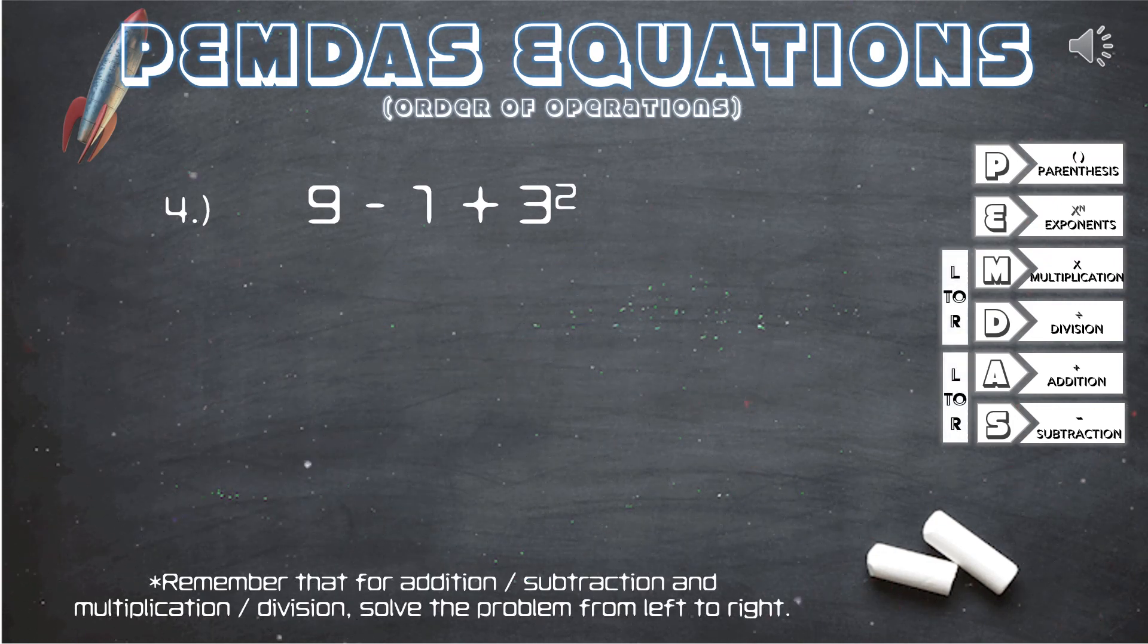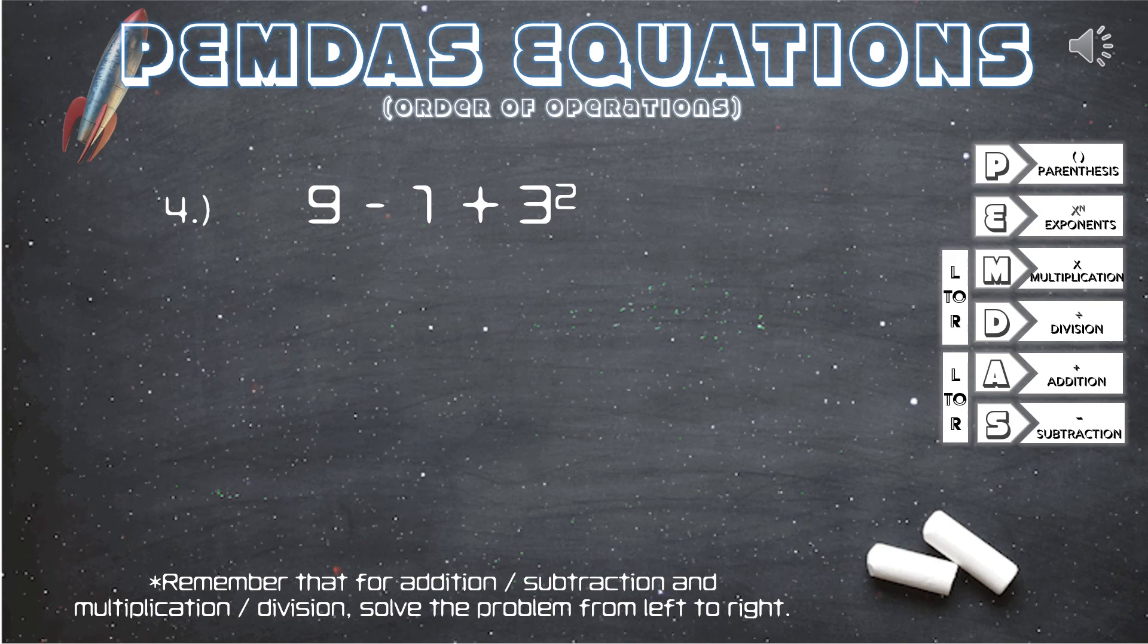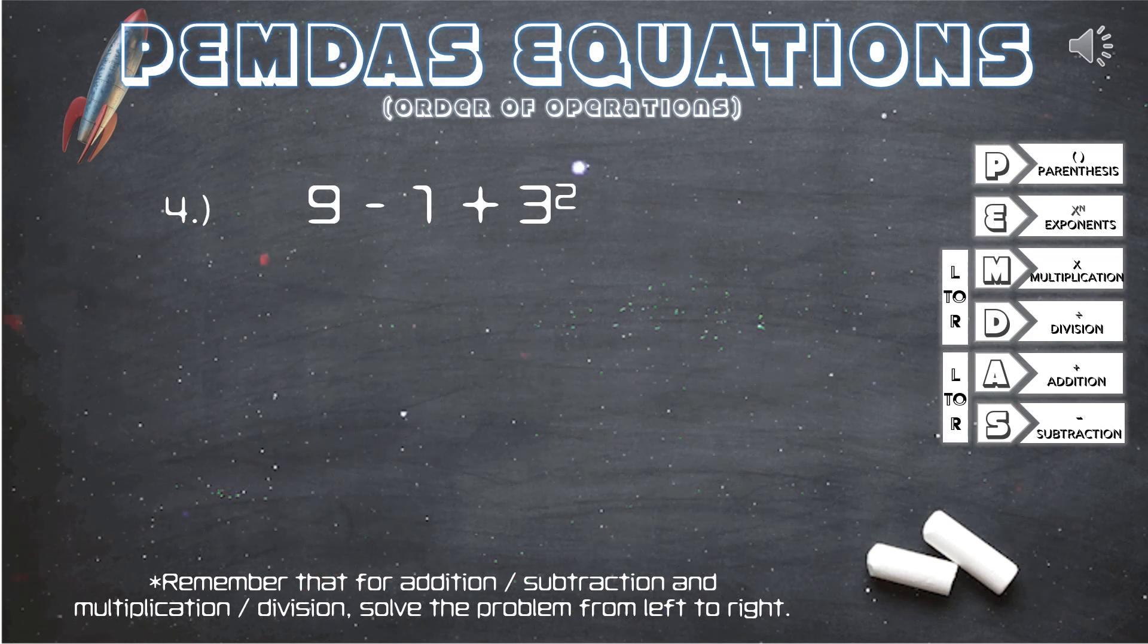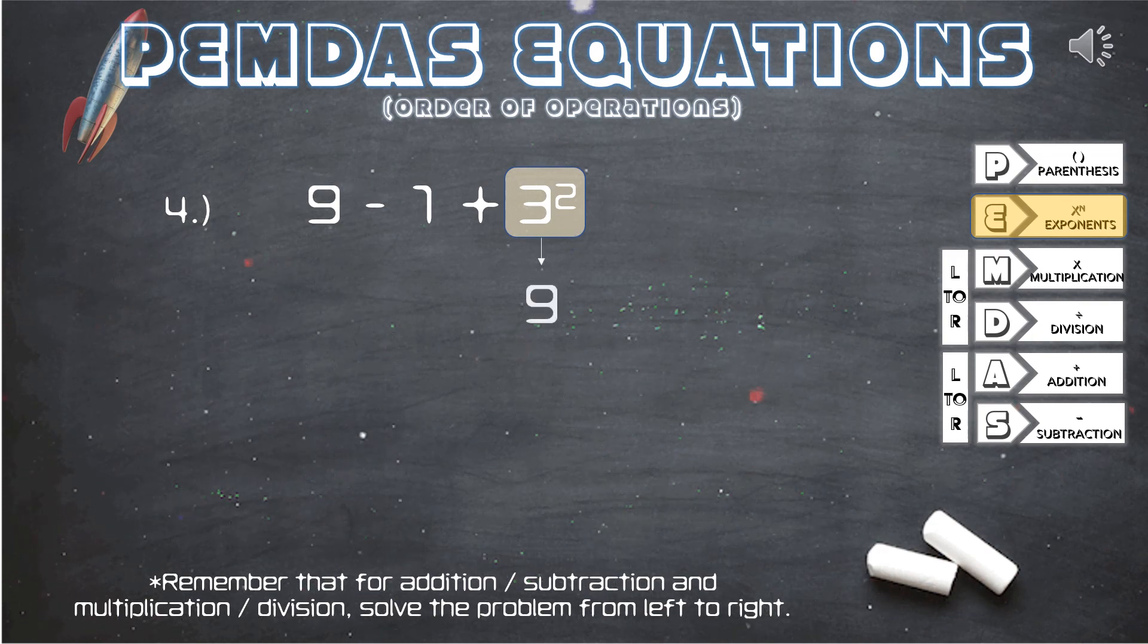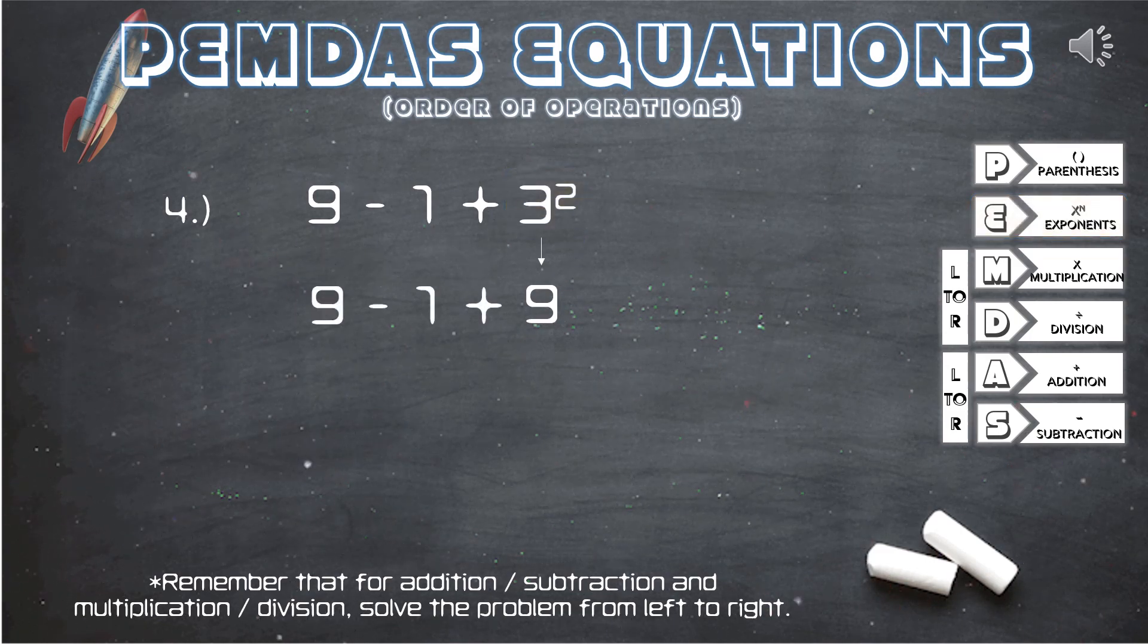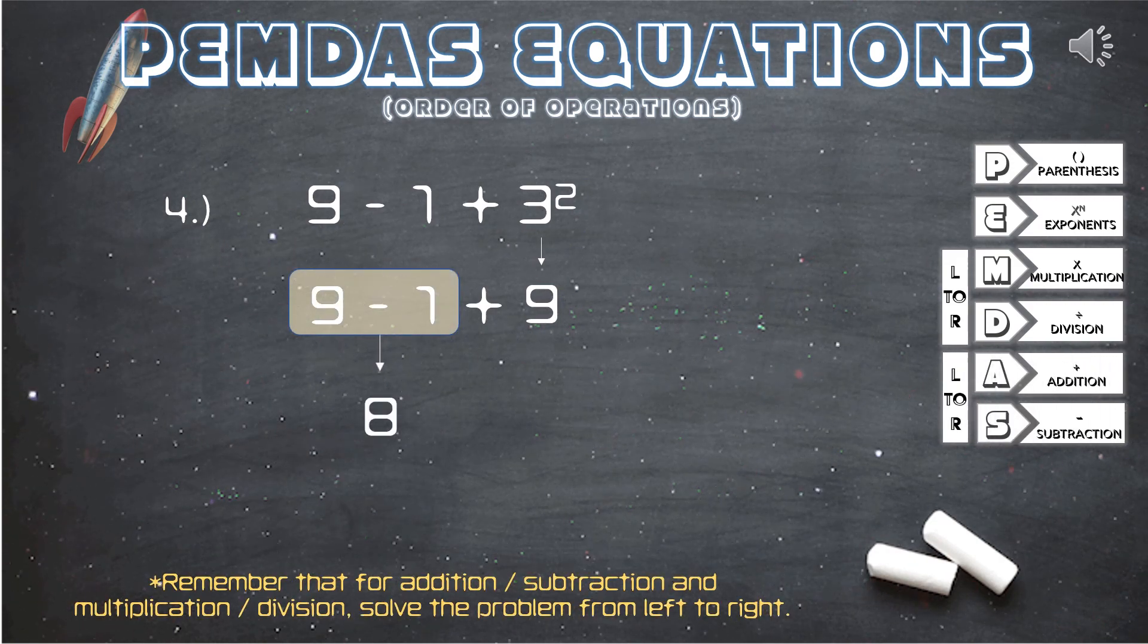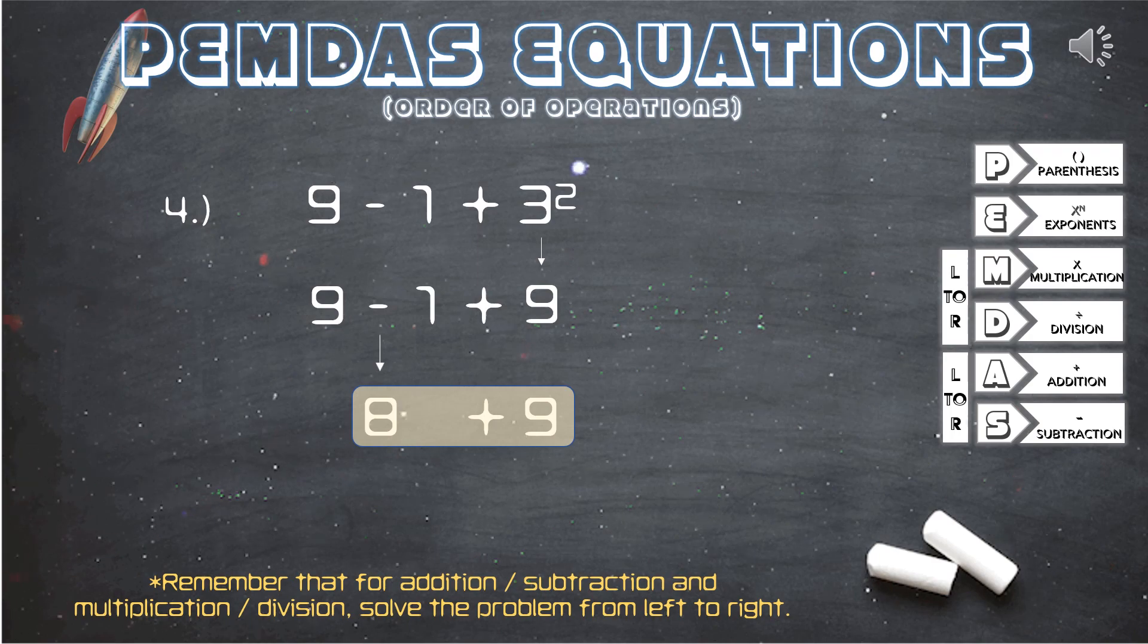Question 4. 9 minus 1 plus 3 squared. We'll check our PEMDAS guide here first. There isn't any parentheses, but we do have an exponent, 3 squared. So this will be 3 times 3, which equals 9. Next, we bring down the rest of the equation. Once again, we're left with subtraction and addition, so we will solve this from left to right. 9 minus 1 gives us 8. Bring down the 9. And now we have 8 plus 9.